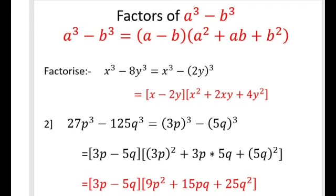Understood? Let us go for the second example: 27p³ - 125q³. First form it into cube form. 27p³ becomes (3p)³. Minus (5q)³. Now this is in the form of a³ - b³. Using the formula, assume a as 3p and b as 5q. So a - b is 3p - 5q.